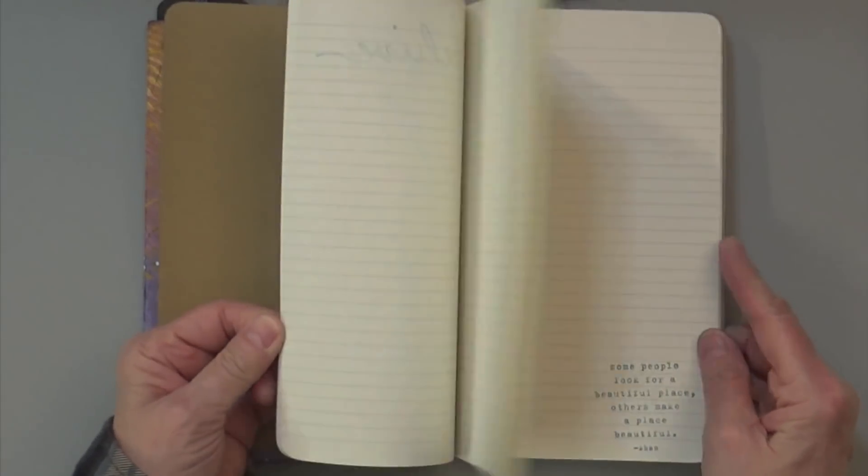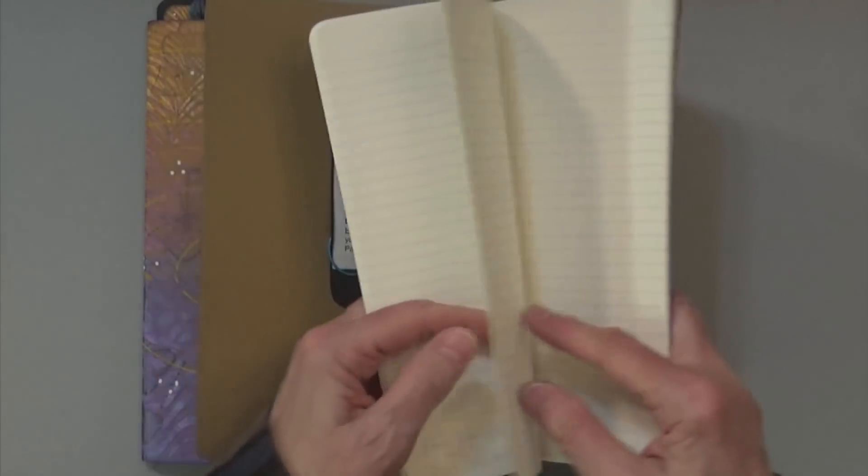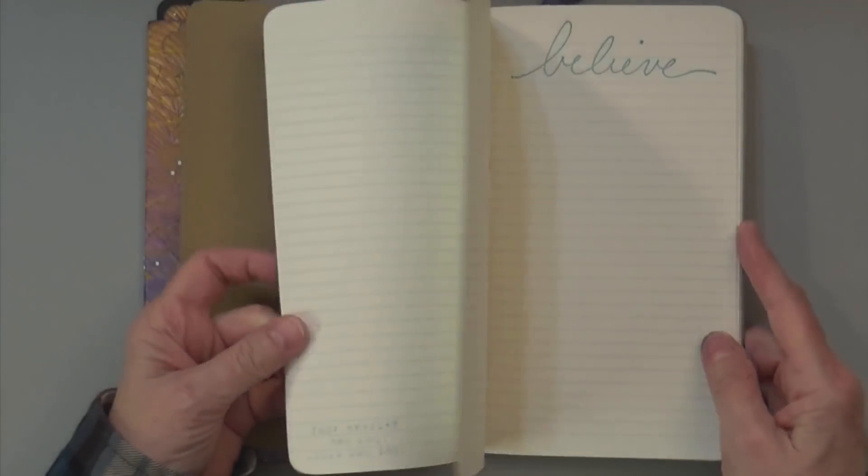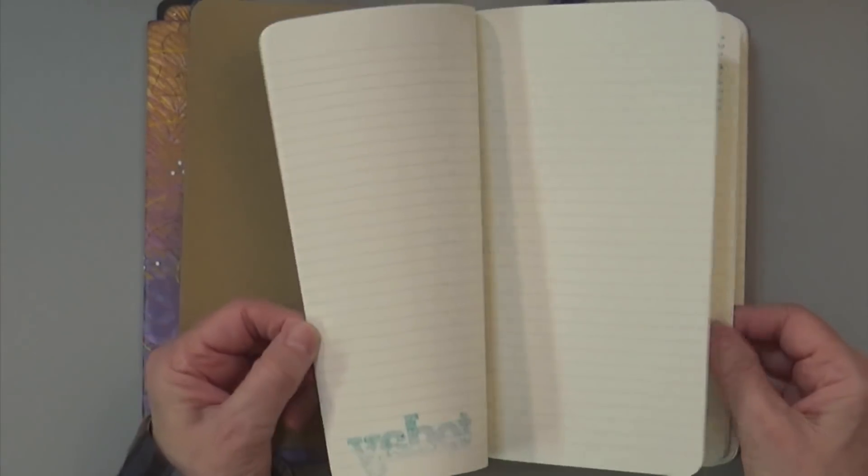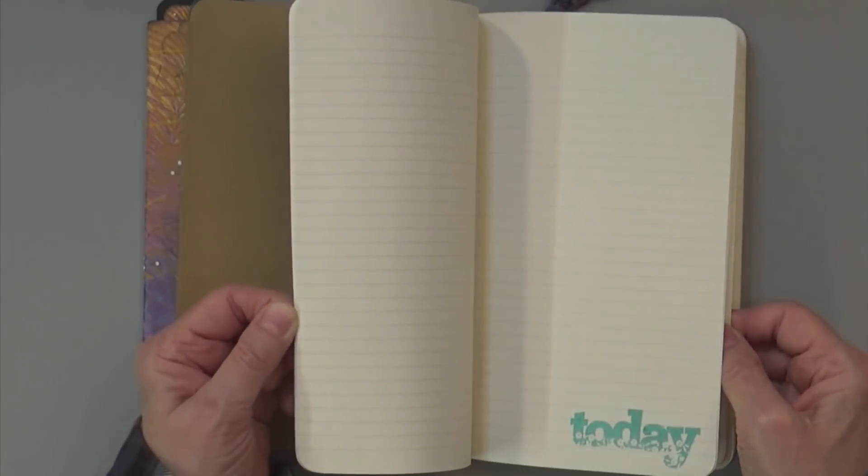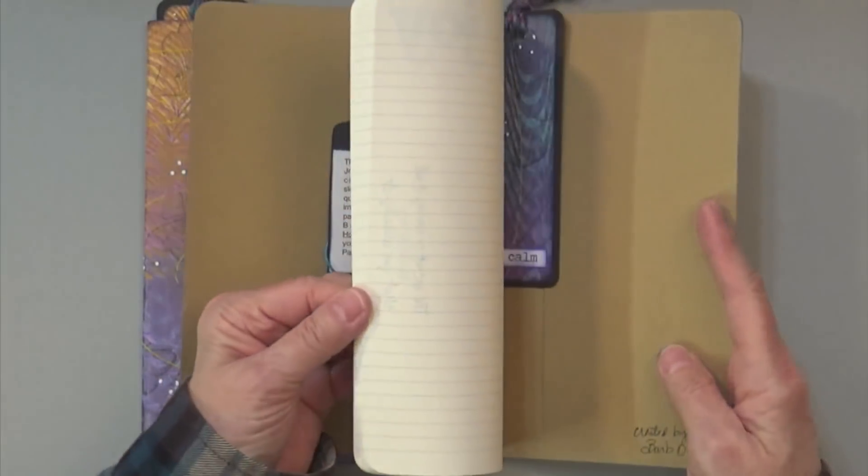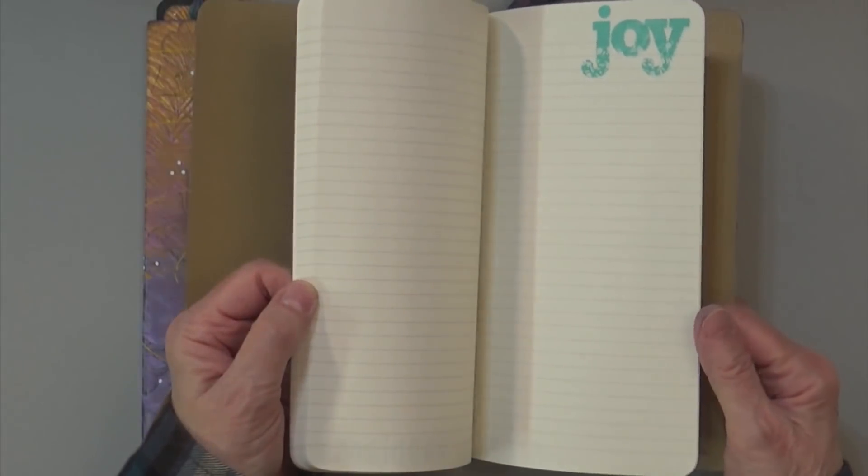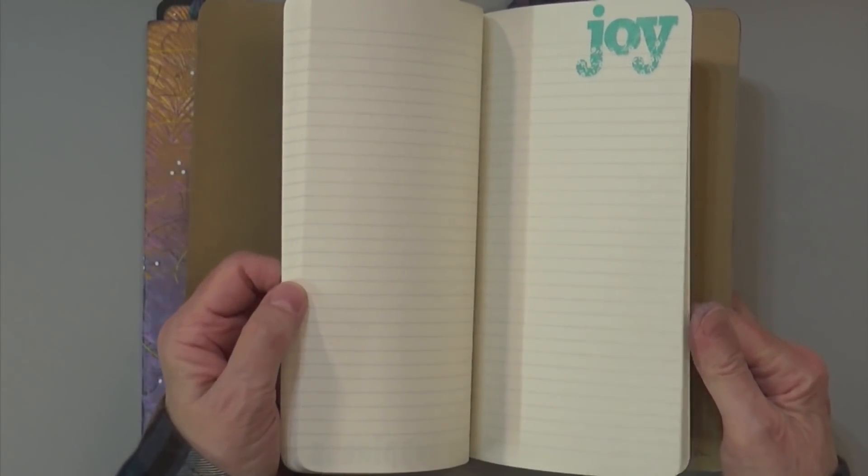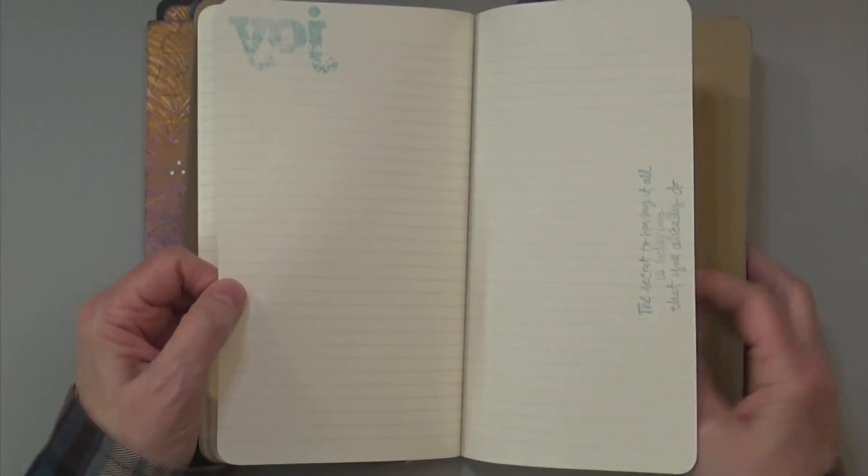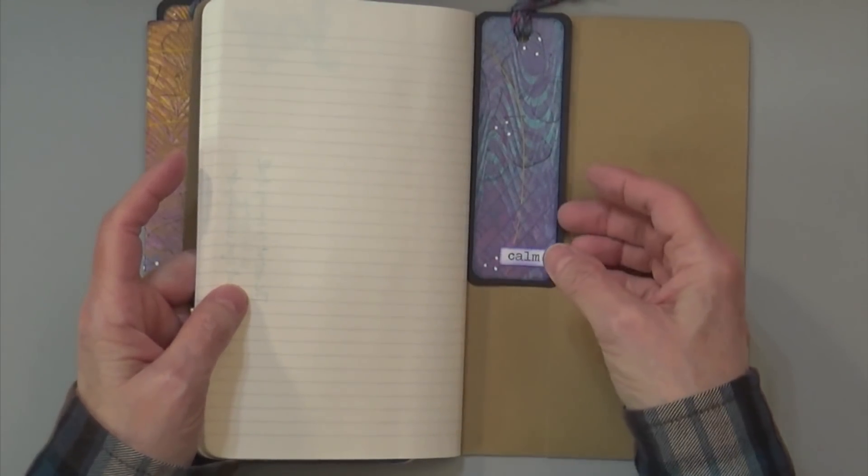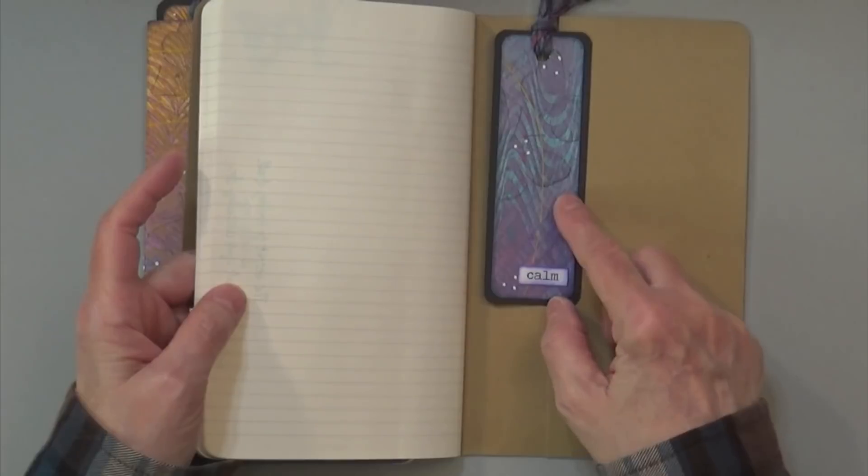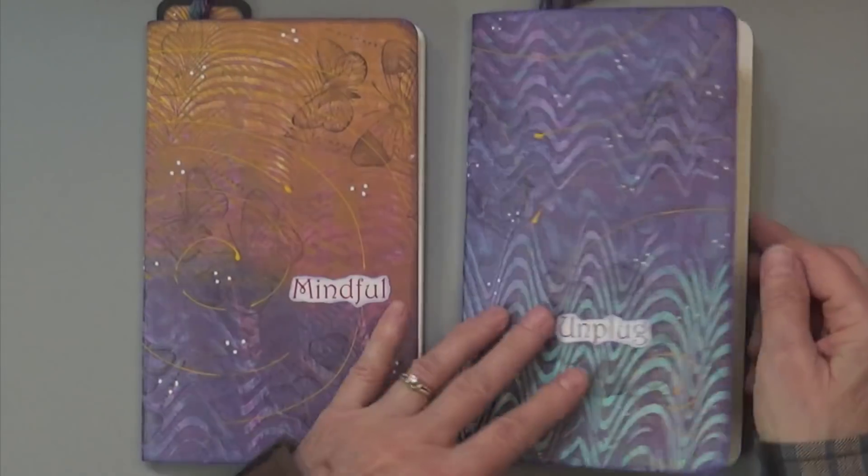I went through each journal and did some random stamping every few pages. I stamped a quote or a word just so that the pages weren't completely blank. Some of the stamping is not perfect, but it's a hand-created journal. Then also there was enough on every painted paper to get a bookmark.